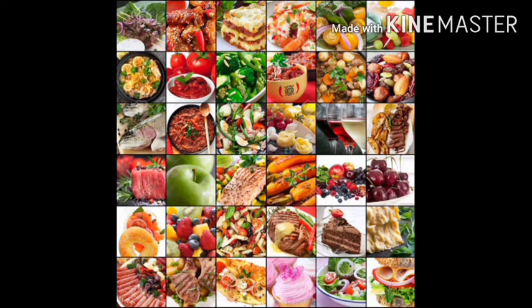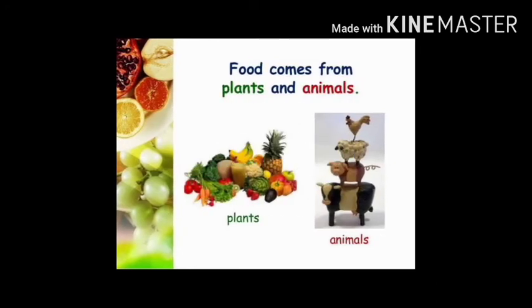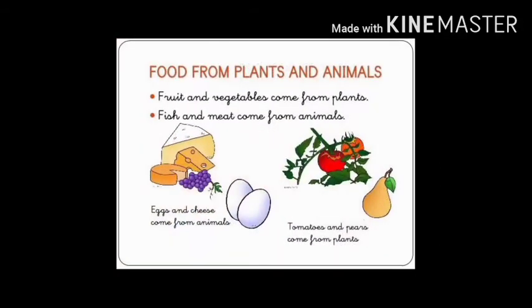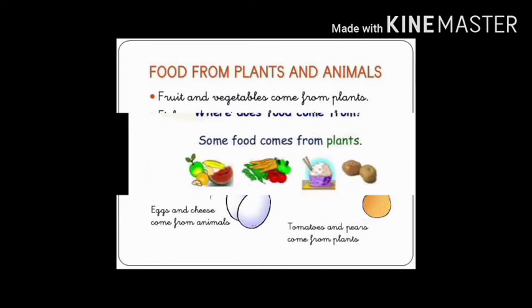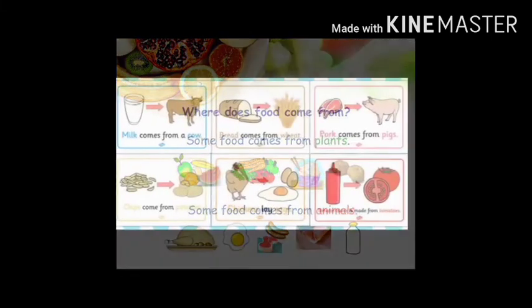Green plants can make their own food by the process of photosynthesis, and that is why they are called producers. Animals obtain food from plants and can also eat the meat and flesh of other animals, so they are called consumers. Fruits, vegetables, spices, and beverages all come from plants.